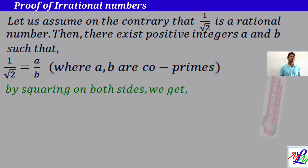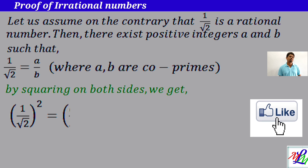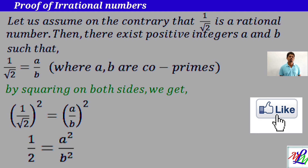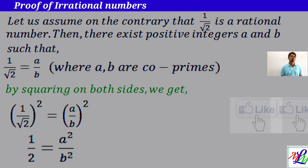On the left side, 1 by root 2 whole square is equal to a by b whole square. That gives us 1 square by root 2 whole square, which equals 1 by 2, equal to a square by b square.